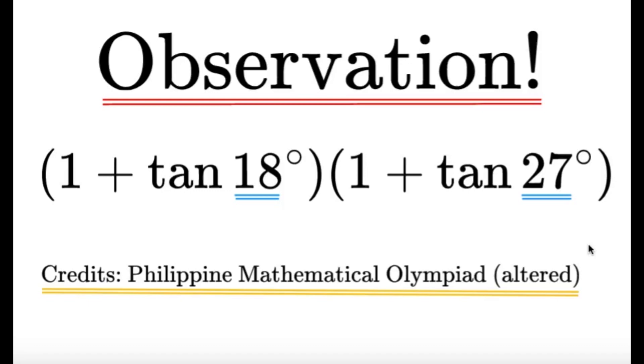Here's an item on trigonometry: 1 plus tangent 18 degrees times 1 plus tangent 27 degrees. Now, credits to the Philippine Mathematical Olympiad for the inspiration on this item.